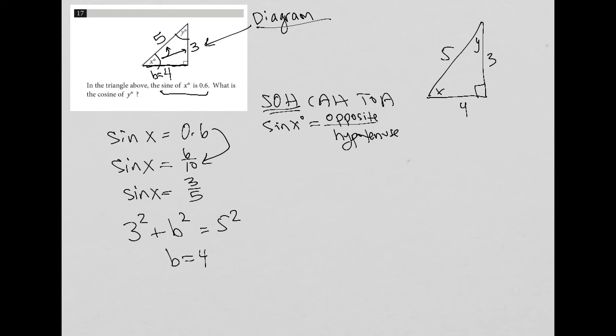So then the question is really asking for the cosine of y. Well, cosine, from SOHCAHTOA, the cosine of y is equal to the adjacent side to that angle divided by the hypotenuse.